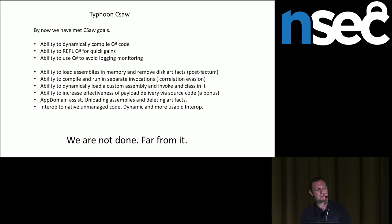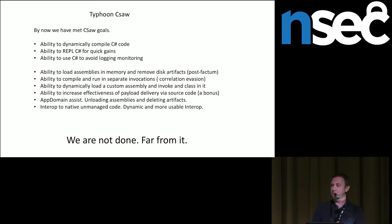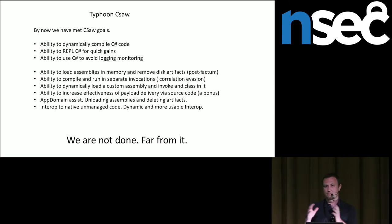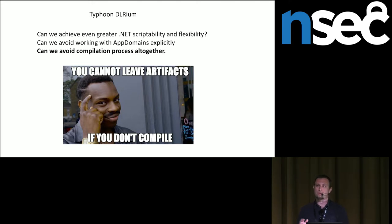By now we've pretty much taken care of the Seesaw goals: we can dynamically compile C# code in REPL, load and unload assemblies into memory, take care of artifacts on the system, remove DLLs once loaded, and do interop with code outside of the CLR. But it's still .NET, it's still compilable. Can we do something better? Can we get more flexibility and more scriptability? Can we forego app domains altogether because they're hard to work with? And can we actually avoid compilation entirely?